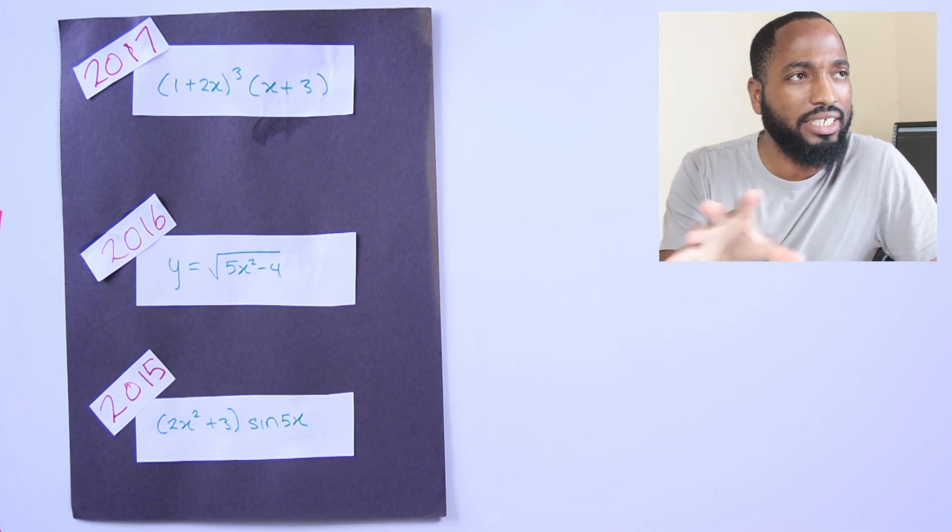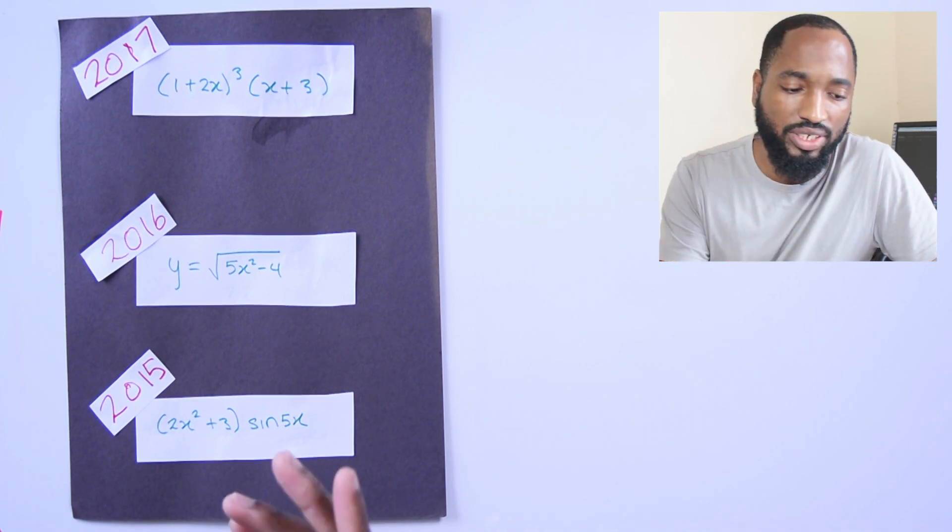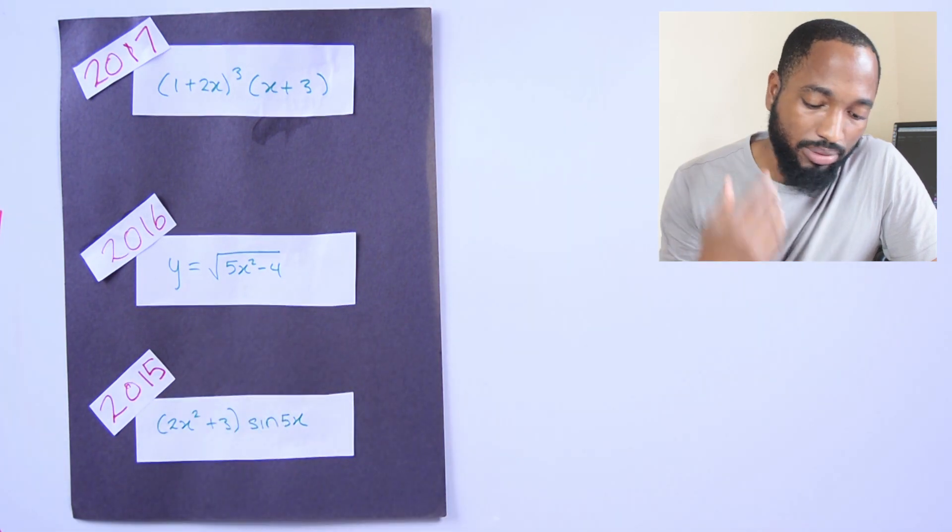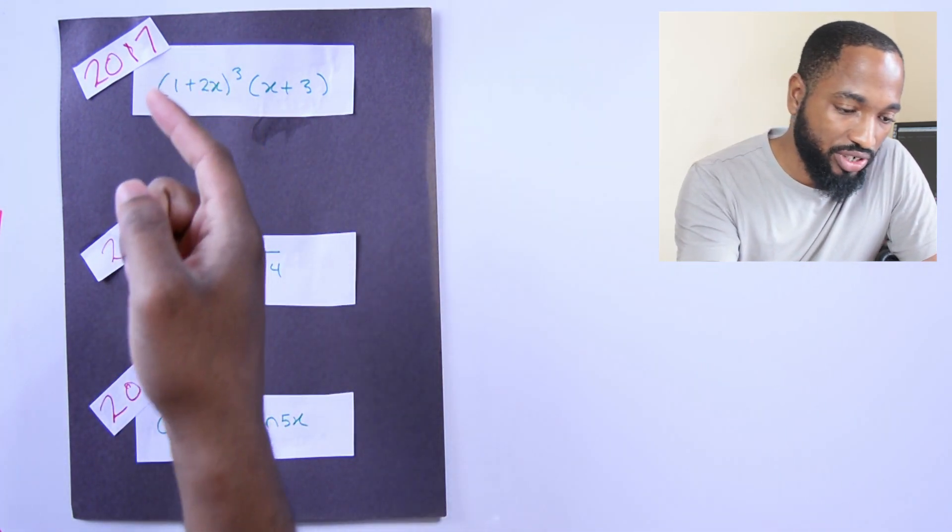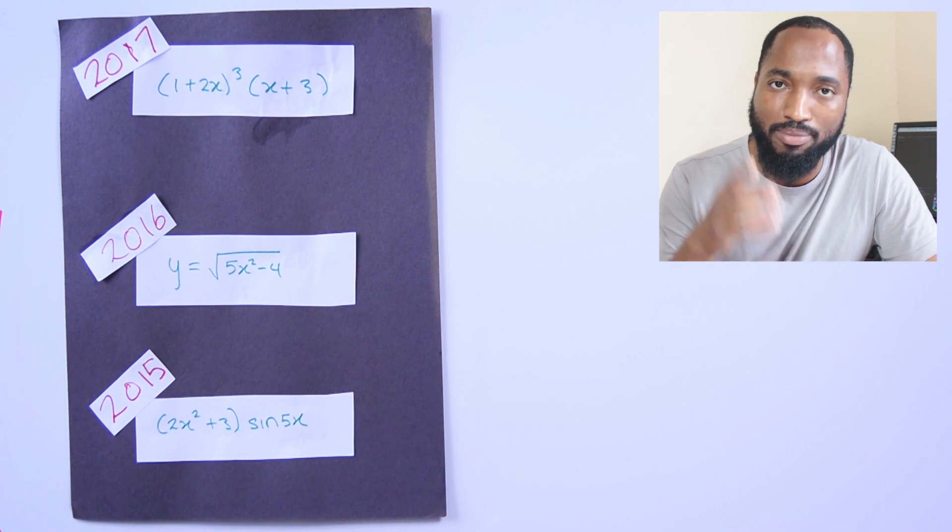Alright, so we're looking at the first part of the differentiation question. In the last three years, they ask you just to differentiate some simple function. So we're going to look at those last three years: 2017, 2016, 2015, May, June.